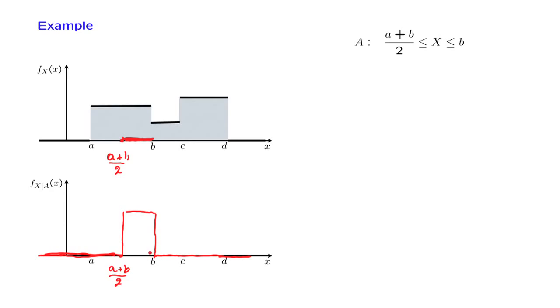Because in this case, the length of this interval is half of the distance between b minus a. So the length of this interval is b minus a over 2. In order for the area under this curve to be equal to 1, it means that the height of this curve has to be equal to 2 over b minus a.